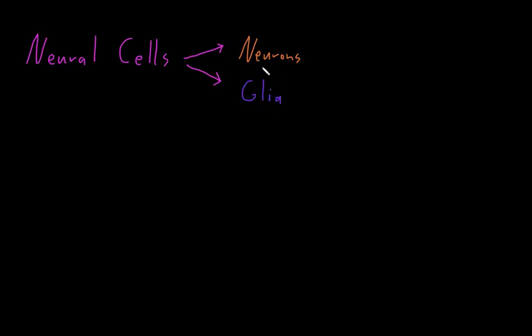Neurons are named from a Greek word for nerve, while glia are named from a Greek word for glue, because they were once thought to do little except glue neurons together.